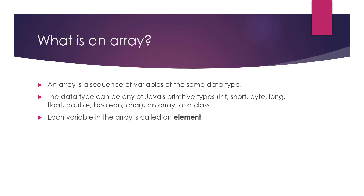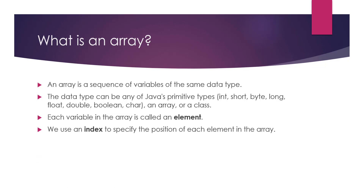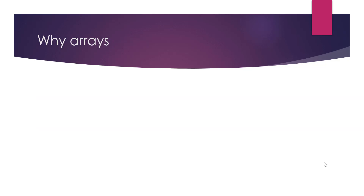Each variable in this array is called an element, and each element has an index — just like what we had with strings, where the first character was at index zero. The first element in our array will be at location zero. We also have a length for the array, so the last element will be at location length minus one.